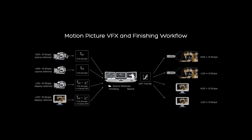We start with scene-referred data, typically from high-end motion picture cameras. We take that data and apply transformations so the data from different sources align better with each other. Intentionally, I try not to use the word "color" yet. After those input transforms, we call that data still scene-referred. That imposes quite some restrictions on the implementation of those transforms.